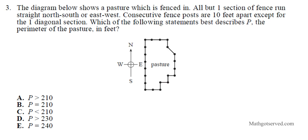Question 3. The diagram shows a pasture which is fenced in. All but one section of fence runs straight north, south, or east-west. Consecutive fence posts are 10 feet apart except for one diagonal section. We are going to add all the north-south or east-west sides. They all measure 10 feet each, so let's count how many there are.